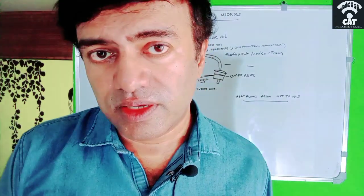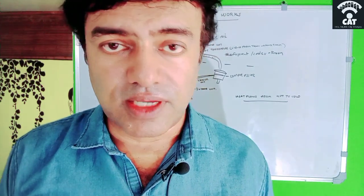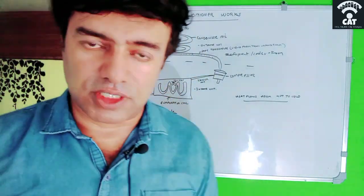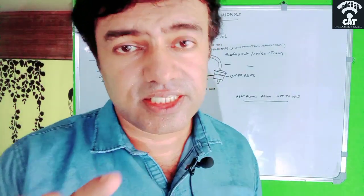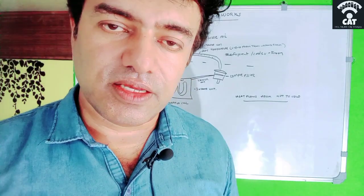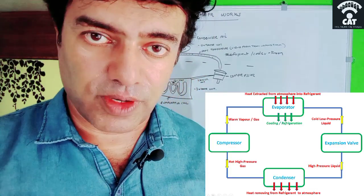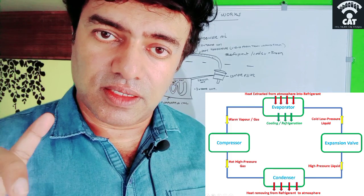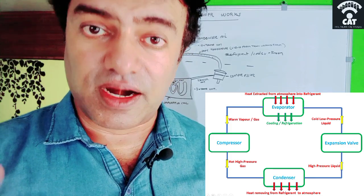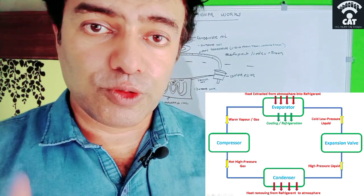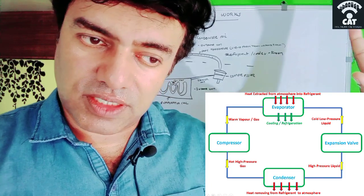An air conditioner has two units: one outside unit and one inside unit. Just remember CCEE — if you remember CCEE you know all the components. The first C is compressor, which compresses the refrigerant. The second C is condenser. These two C's — compressor and condenser — are in the outdoor unit.